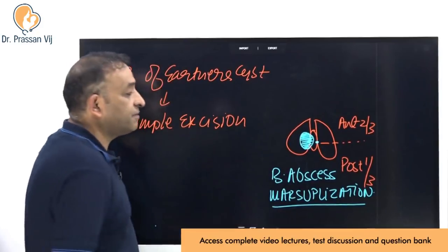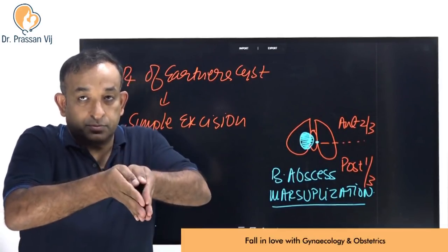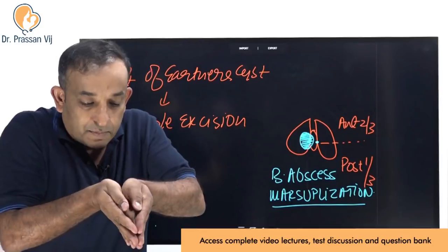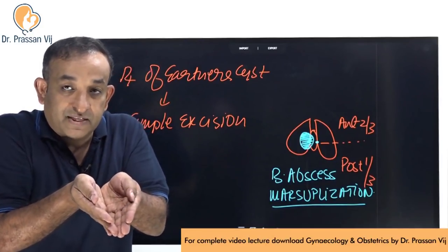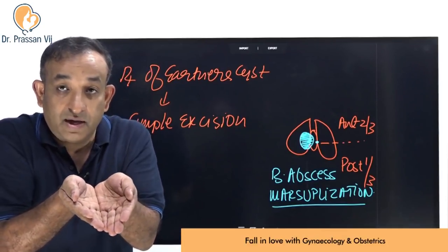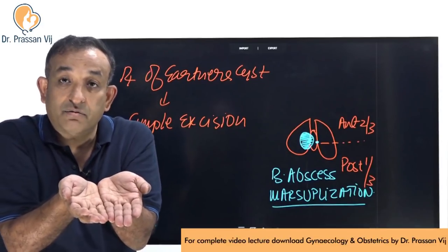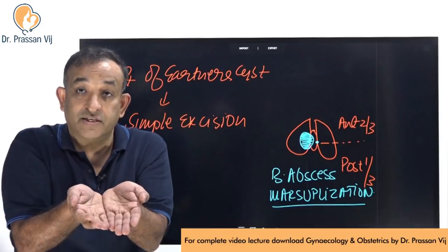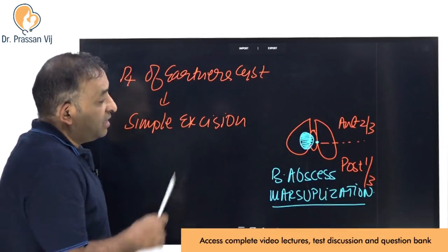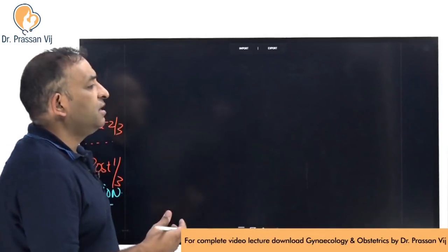The treatment of a Bartholin's abscess is marsupialization — different from simple excision. You make an incision on the abscess, let the pus come out, then evert the edges and suture them to the vulval wall so the interior of the cavity remains exposed. This exteriorization of the cavity allows it to dry up — that is marsupialization of the Bartholin's abscess.